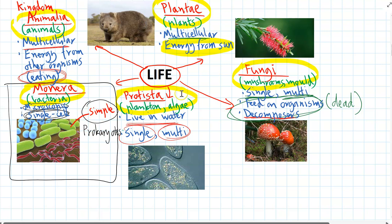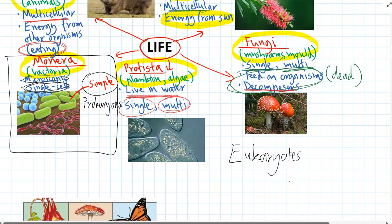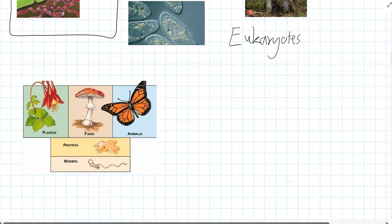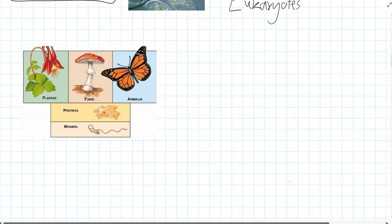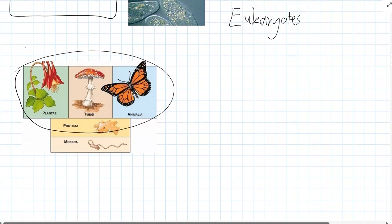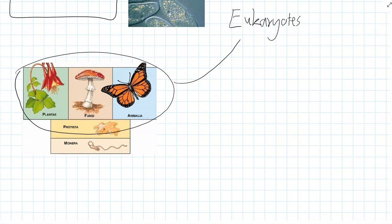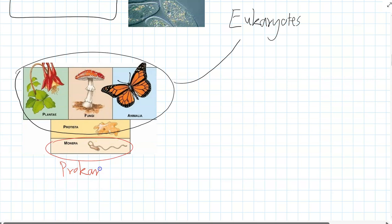Every other kingdom we call eukaryotes. Plants, fungi, animals, and Protista are all eukaryotes. Monera are on their own as the prokaryotes. In other words, they are prokaryotic and we are eukaryotic.